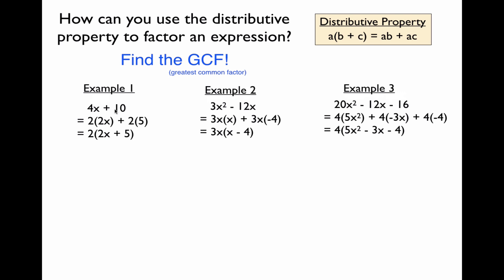In example 1, we have 4x and 10. Looking at the numeric terms 4 and 10, they both share a 2. So we can think of 4x as 2 times 2x and 10 as 2 times 5. This exactly matches the form a times b plus a times c from the distributive property. Our common factor a is 2, so we can rewrite this as 2 times the quantity 2x plus 5.